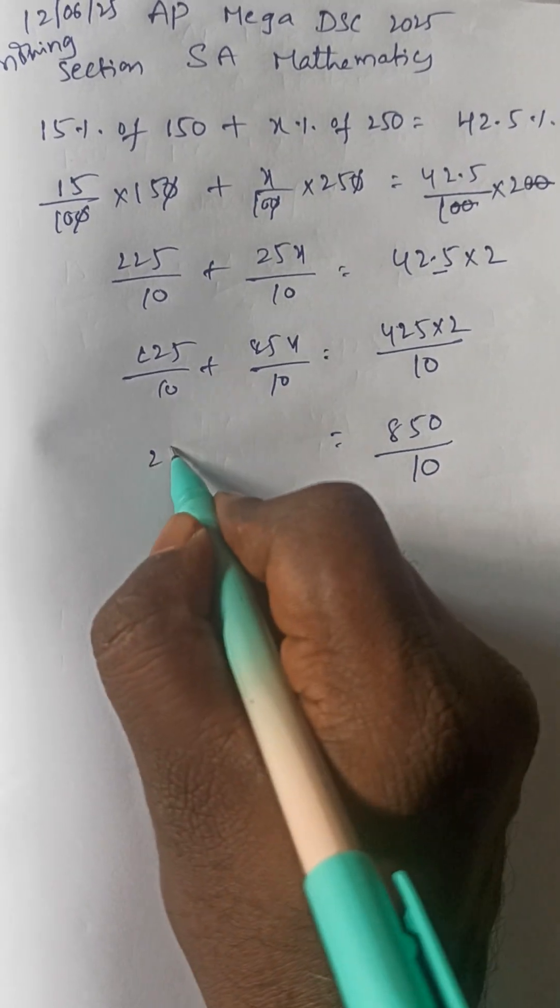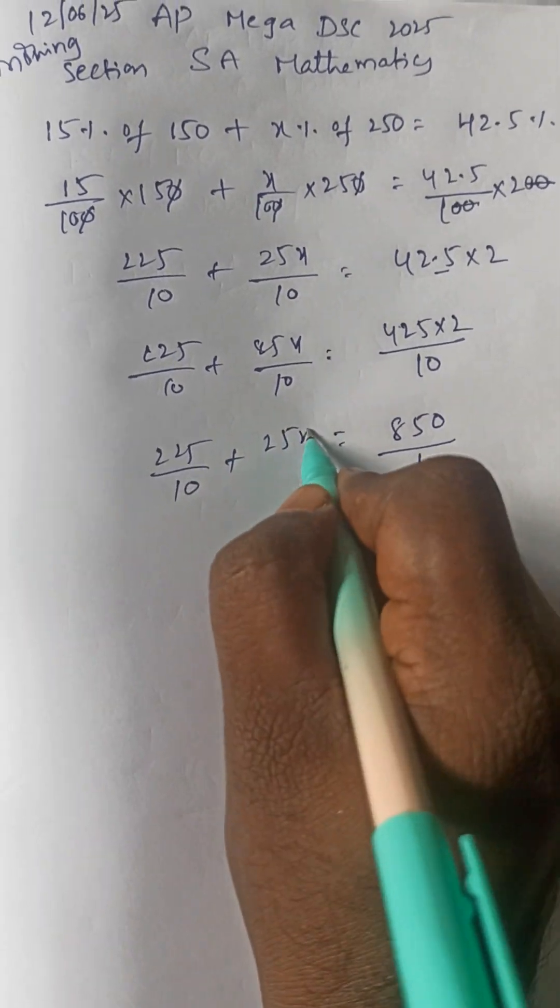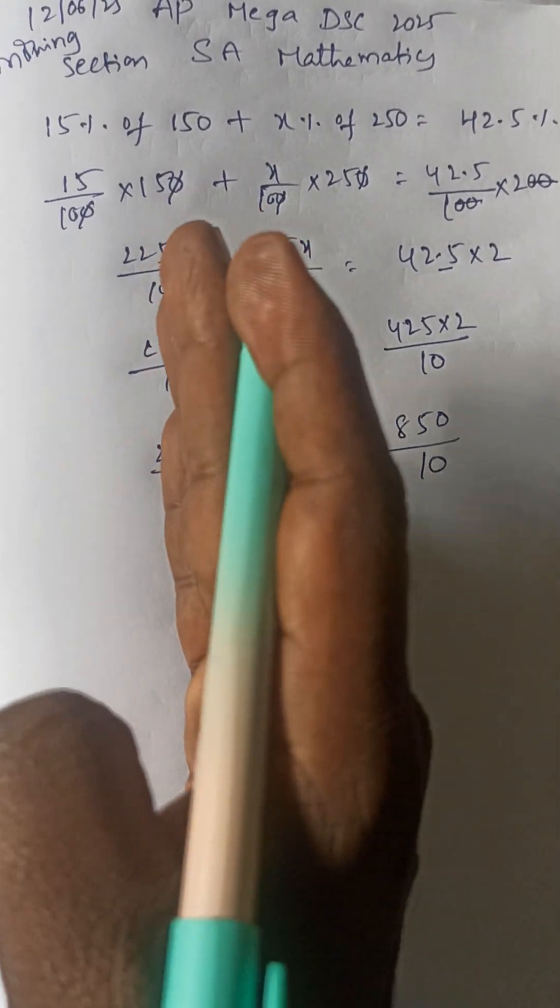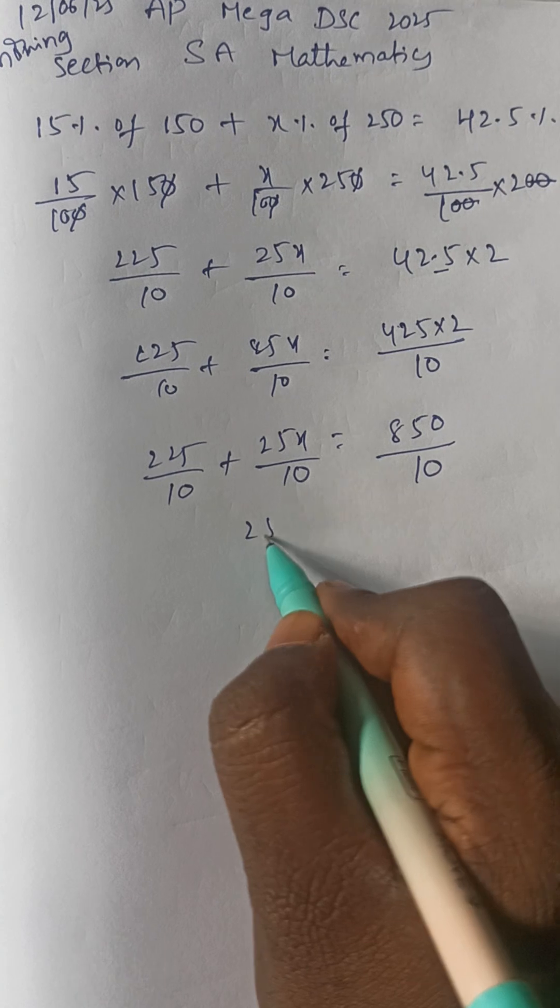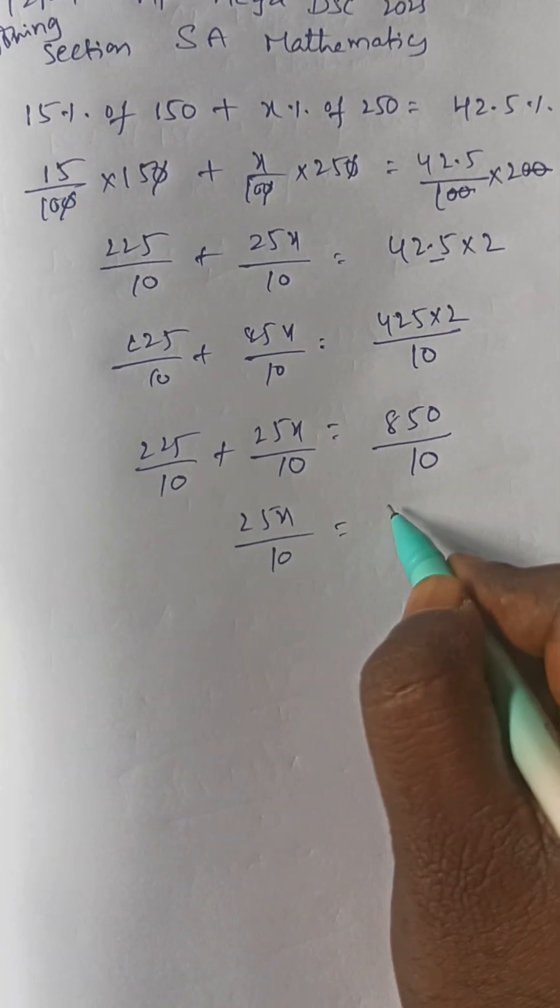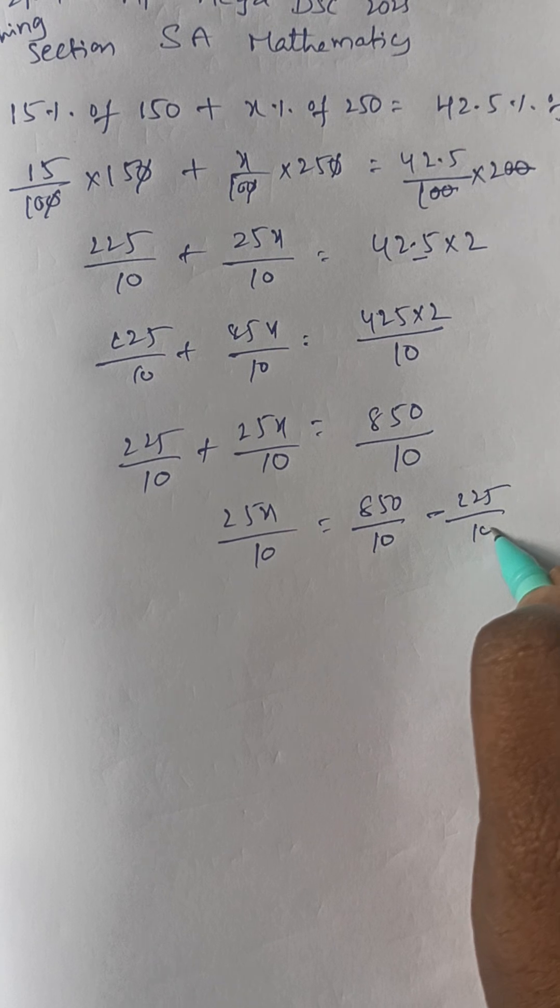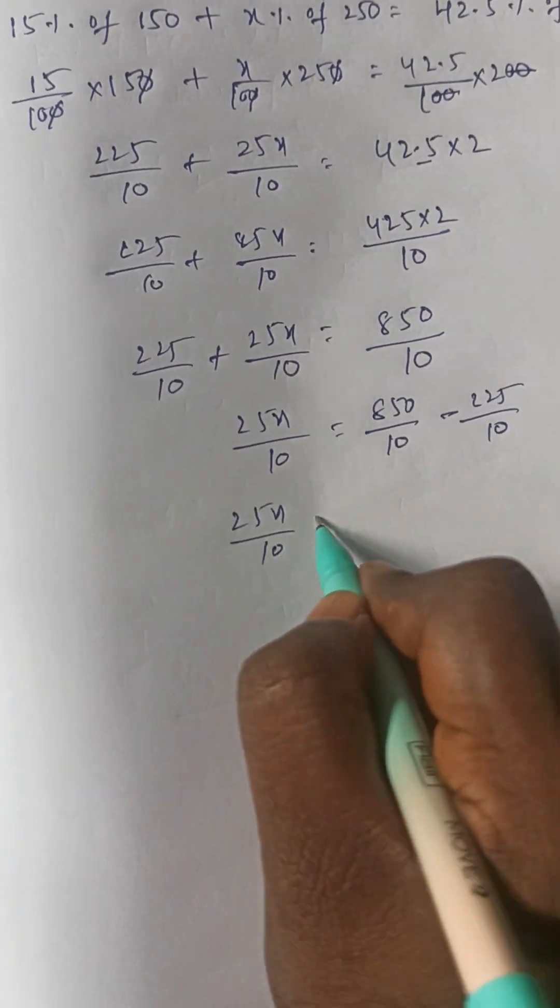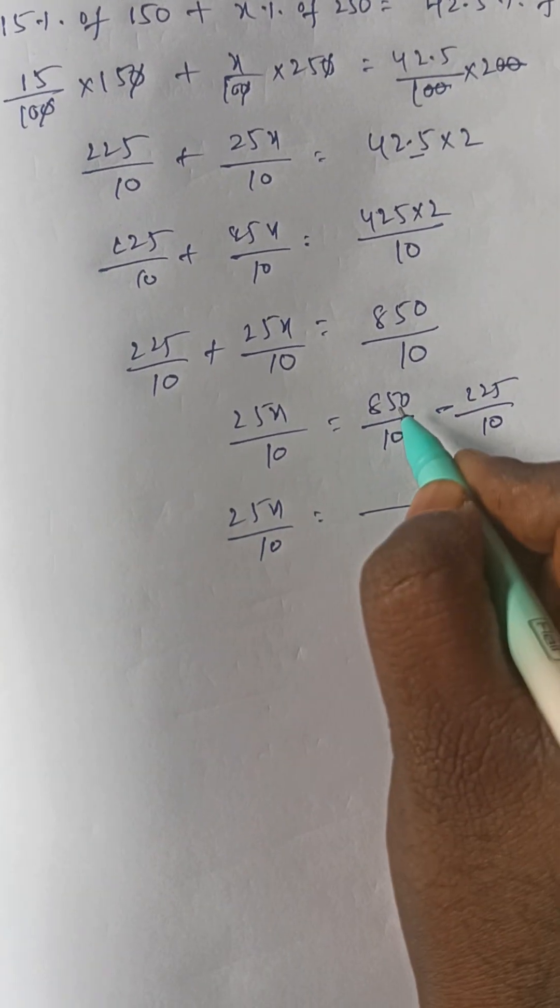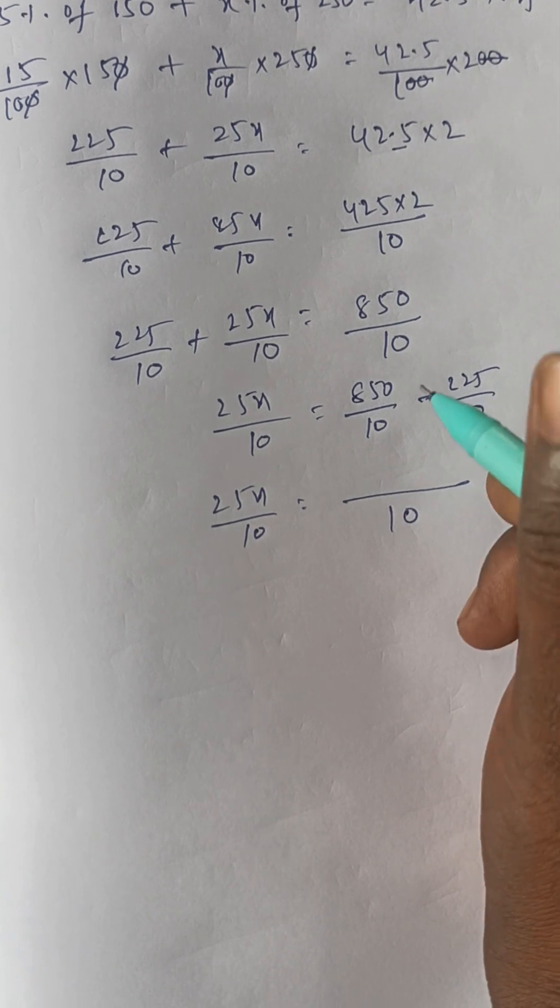225 by 10 plus 25x by 10. Now 225 itself goes to the minus side, so 25x by 10 is equal to 850 by 10 minus 225 by 10. So 25x by 10 equals 850 minus 225, that is 625 by 10.